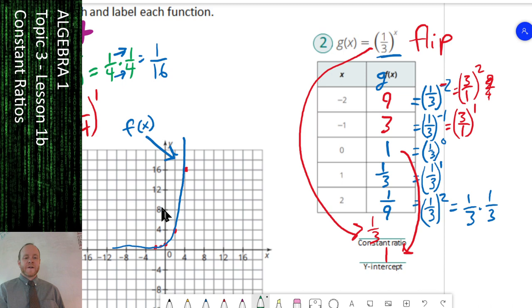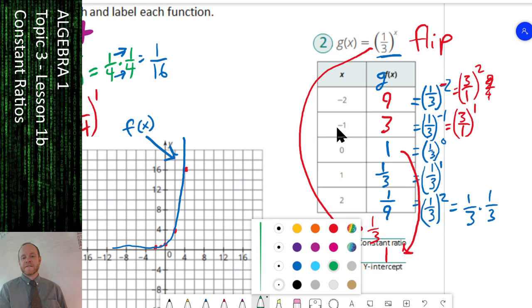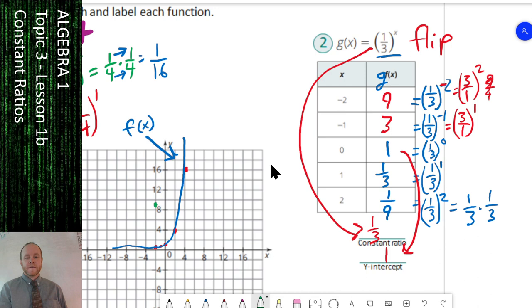We'll go ahead and graph this one. I changed this on the worksheet so yours might be easier to graph. Regardless, go ahead and take a look at your numbers and whatever scale it has there. We'll graph these five ordered pairs. Negative 2—so left 2 and then up 9. Left 1 and up 3. Stay right in the middle and go up 1. Then we're going to go to the right 1, up 1 third. To the right 2 and hardly up any at all.